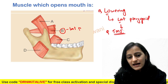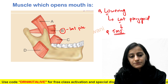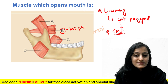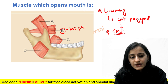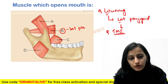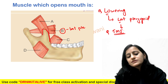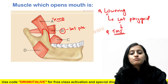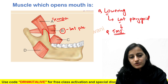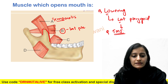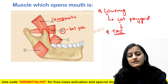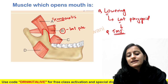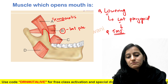Muscle B is lateral pterygoid. What is muscle A? Coming from above, going to the coronoid process of the mandible — that is going to be the temporalis muscle. This is the temporalis muscle. The two muscles C and D are related to the mandible.